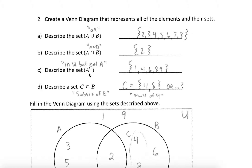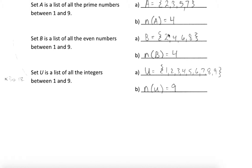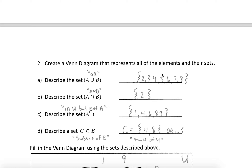We could also ask what is not in set A, or what's the complement of set A. We'd name all elements in the universal set that were not in set A: the numbers 1, 4, 6, 8, and 9. And lastly, describe a set C that's a subset of B — a smaller set of B. You could really take any of the elements in B and describe them in a smaller set. For example, maybe create a subset that's multiples of 4 in our universal set. As long as we take elements from B and don't take all of them — because that would just be set B — we take a smaller subset.